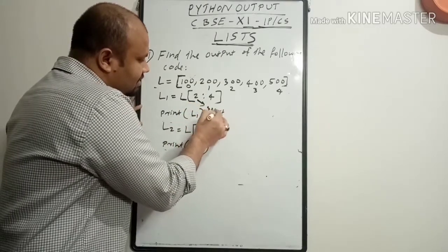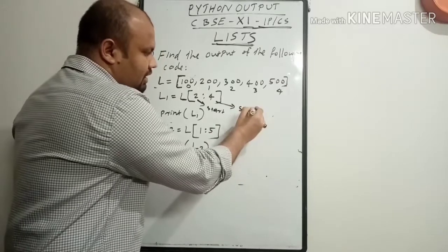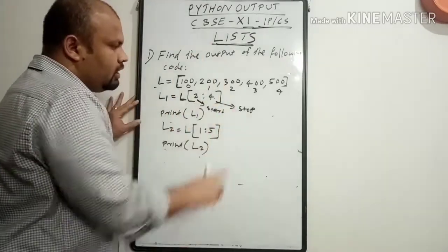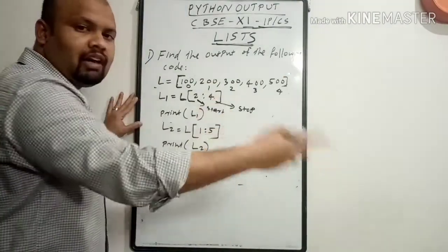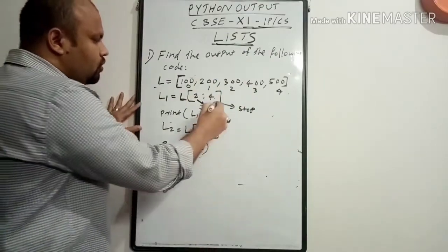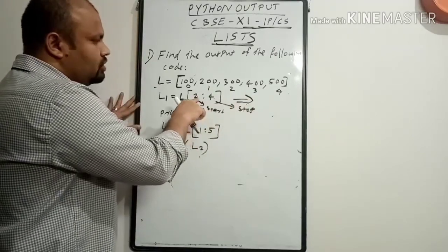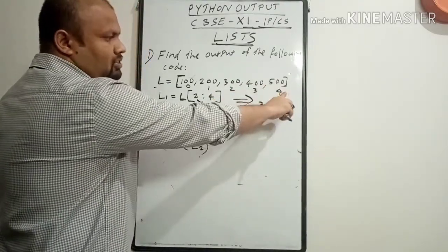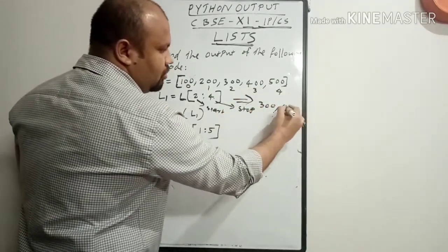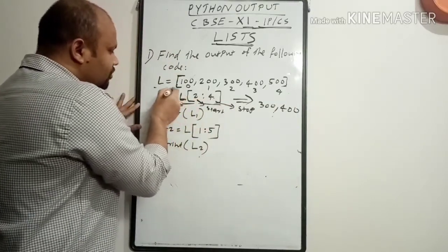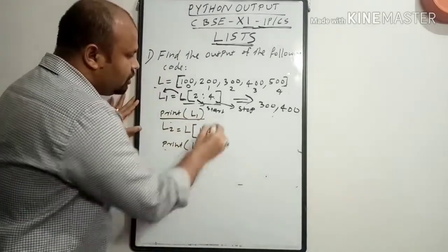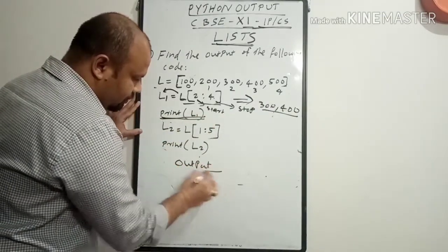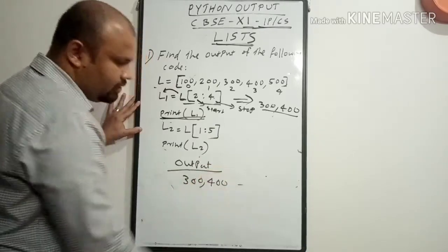For L[2:4], this indicates the start index and this indicates the stop or ending index. L1 = L[2:4] means starting index is 2 and ending index is 4. One important point: the ending index value will be excluded, so it will take values up to index 3 only. Index 2 is 300, and it prints up to index 3 which is 400. So L1 will store [300, 400]. If you print the value of L1, the output will be 300, 400.